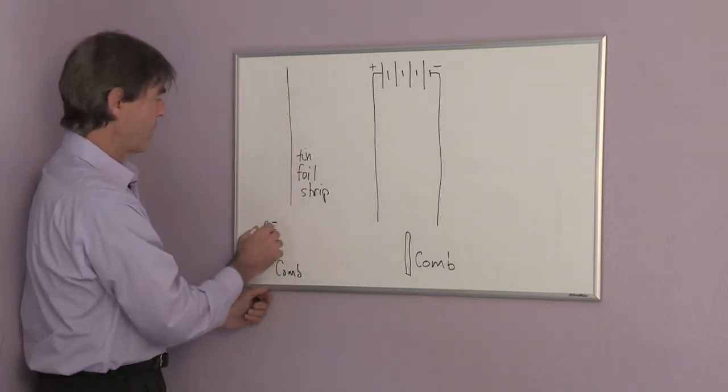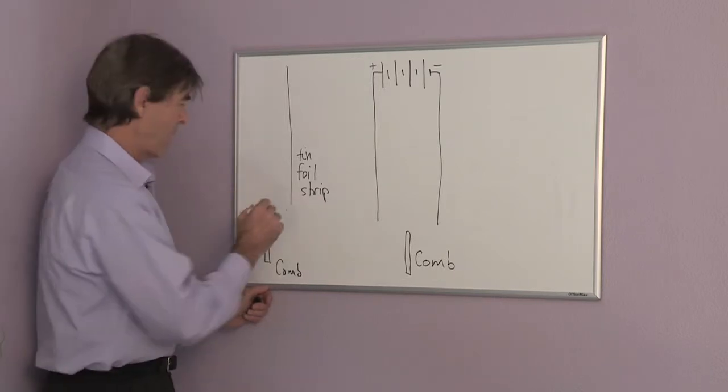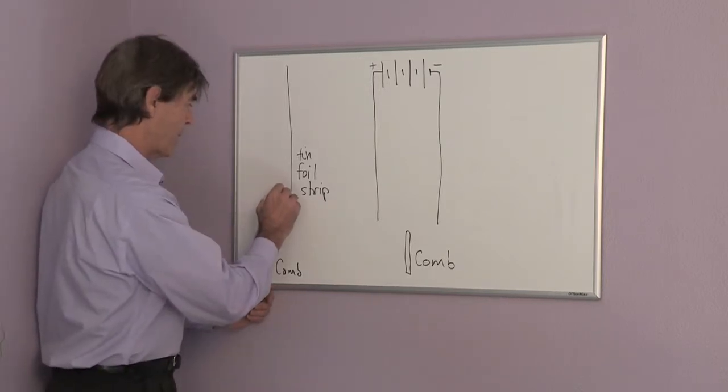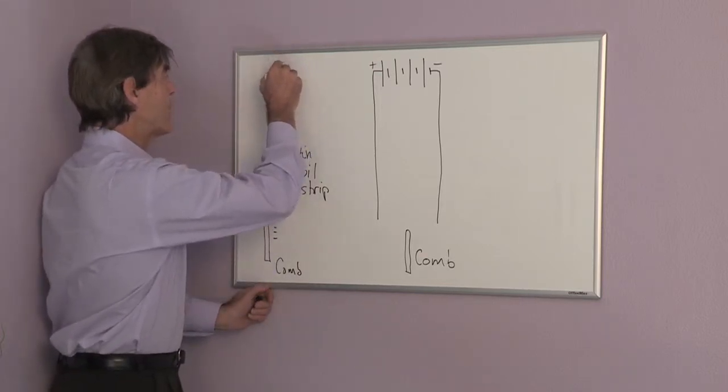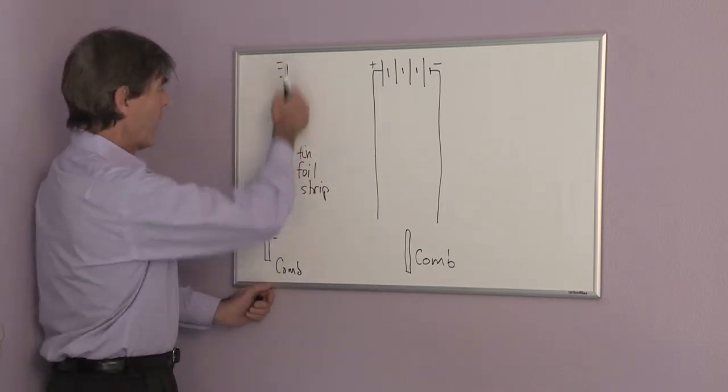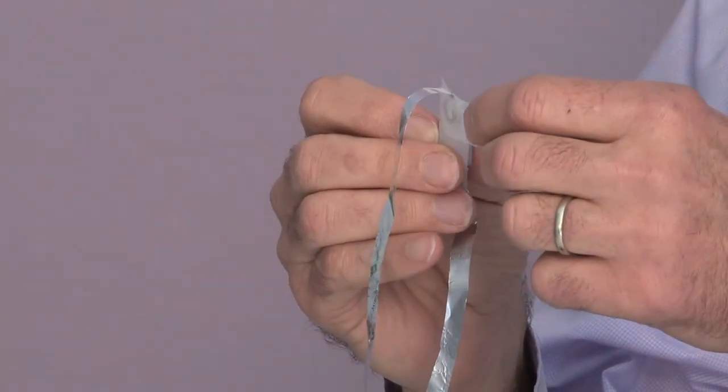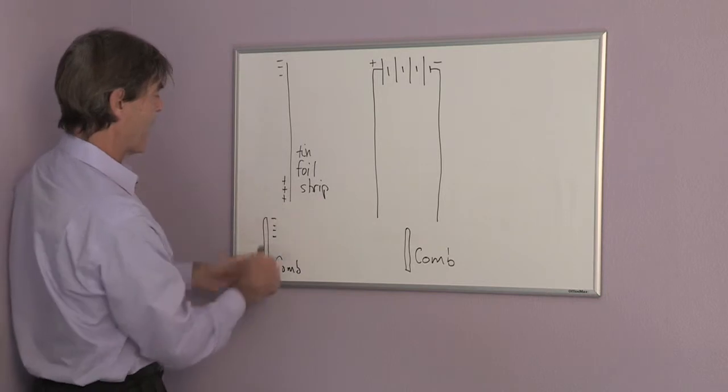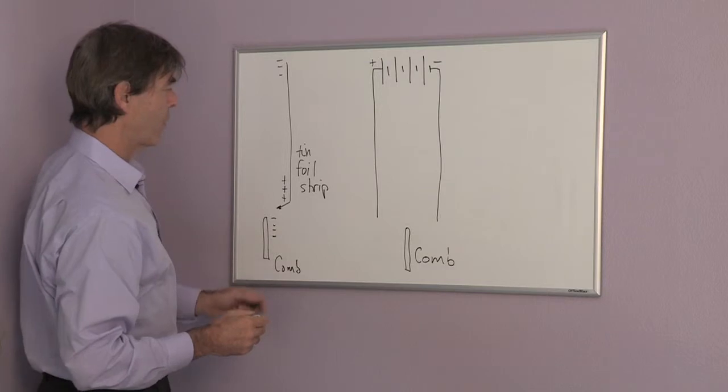The tinfoil strip is attracted to the comb because opposite charges attract. What happens is, in the tinfoil strip, because it's metal, the strip becomes charged also at the end, and then they attract each other. So there's a force on this tinfoil strip towards the comb.